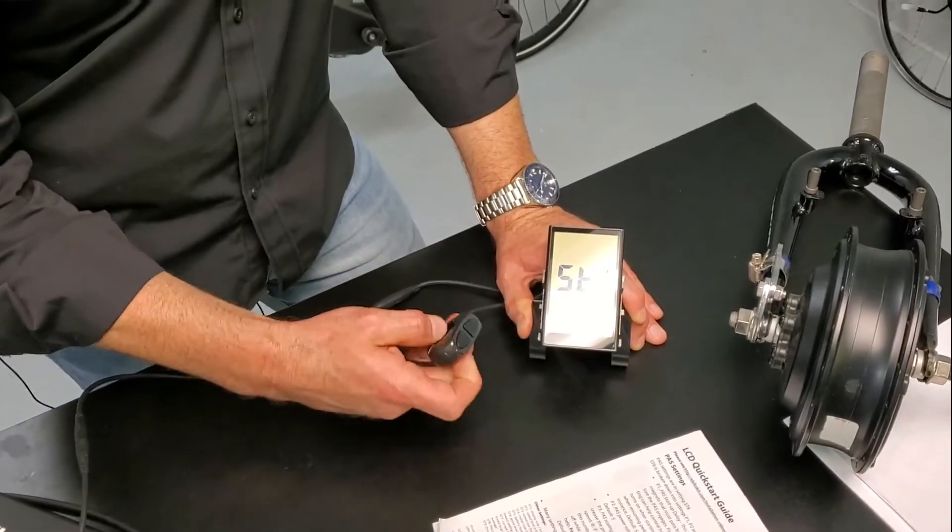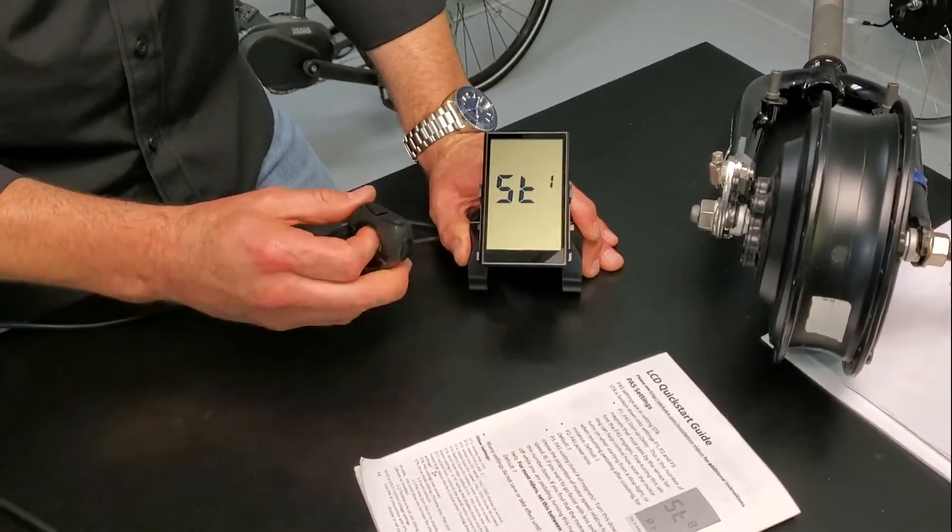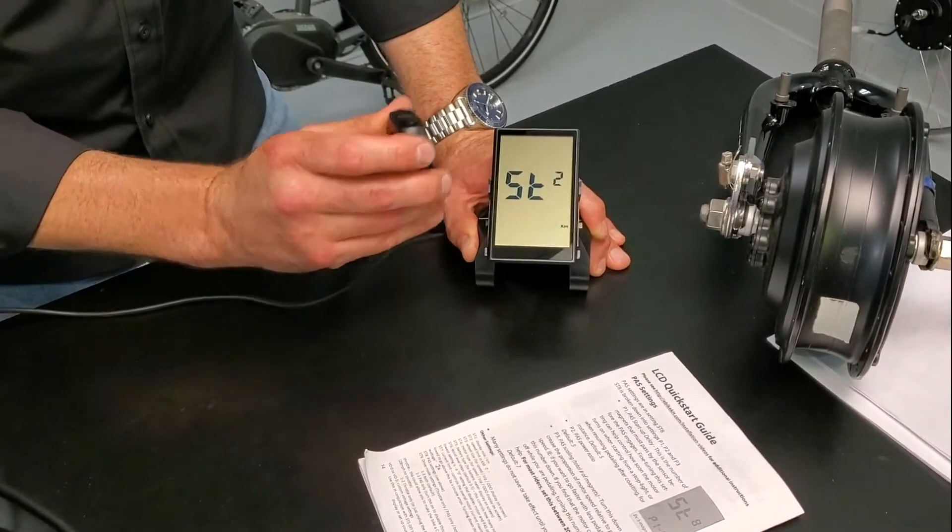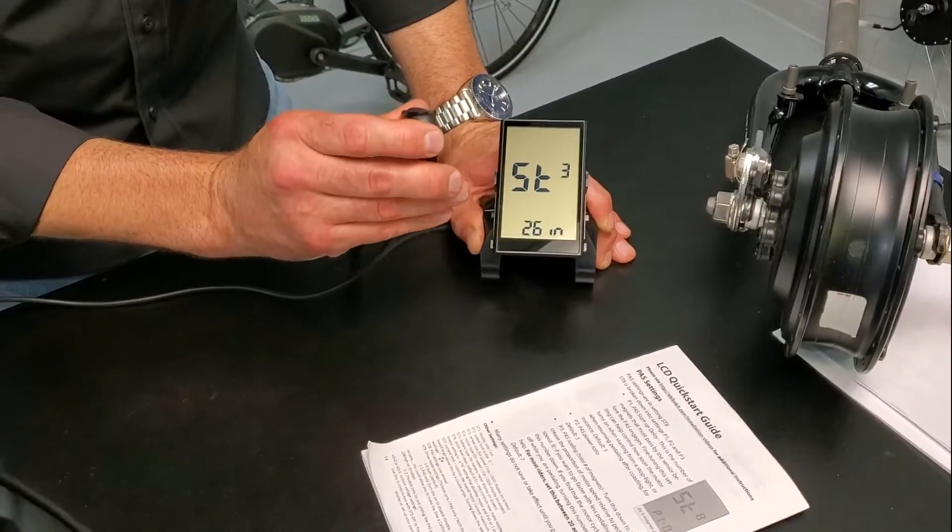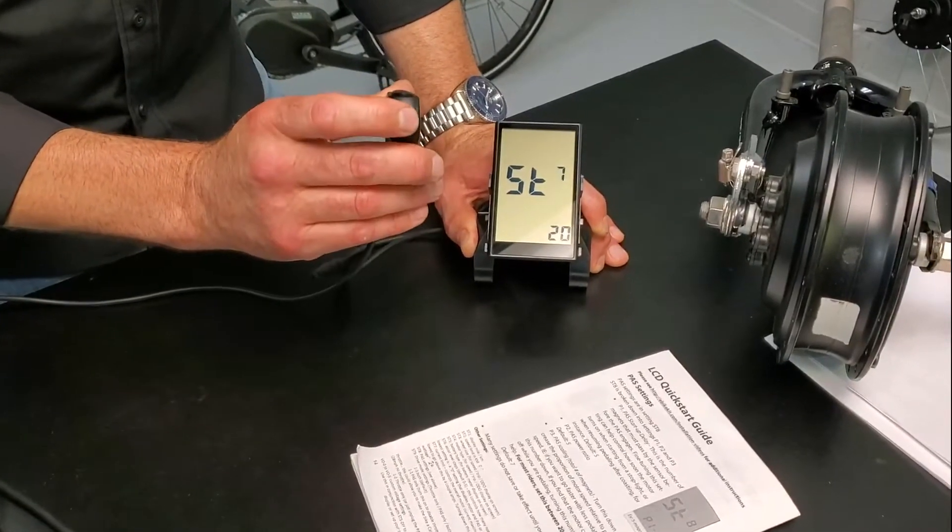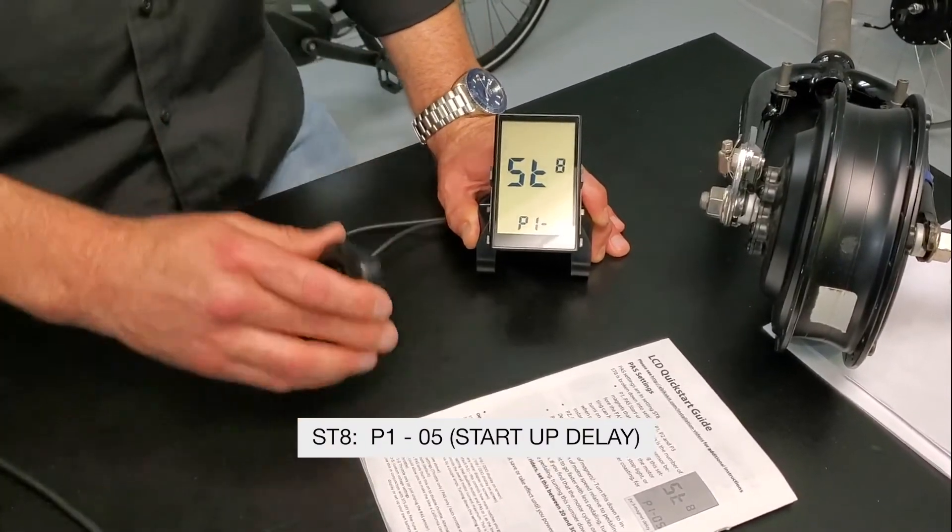This is ST1 or setting one, and we're going to cycle through using this M button on the side. So we're going to click M. We have ST2, M, ST3, M, ST4, ST5. Quick press is on the M, ST6, ST7. ST8 is where we want to be.